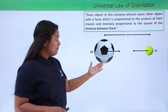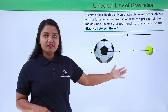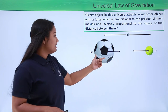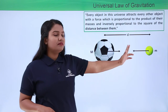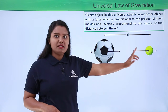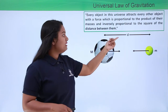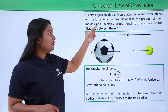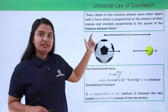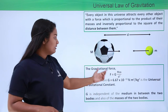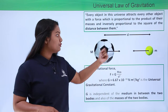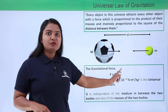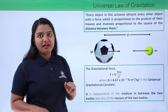Now let's say we have two objects — a football and a tennis ball. The football has a mass of capital M and the tennis ball has a mass of small m, and d is the distance between these two balls. According to the universal law of gravitation, the gravitational force between these two objects equals G times capital M times small m divided by d squared.